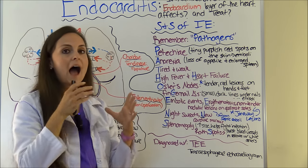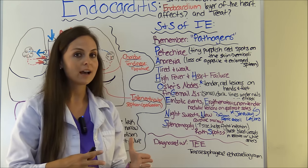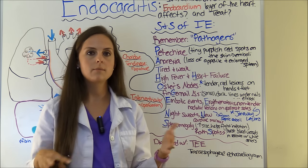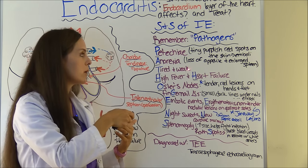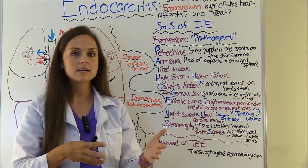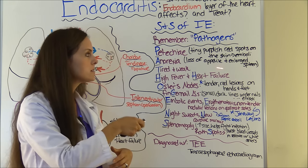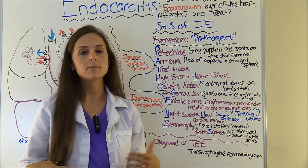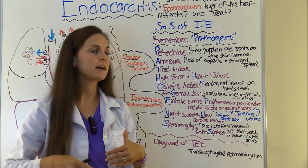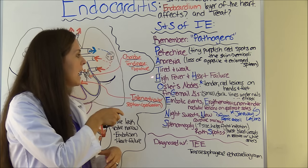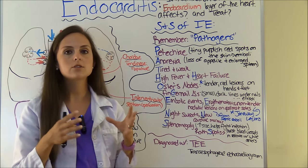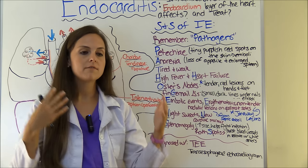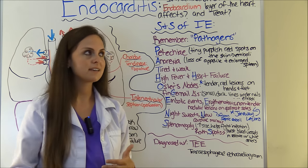P is for petechiae — tiny purplish-red spots on the skin from emboli breaking off. A is for anorexia — the patient doesn't feel good and has a loss of appetite, also because the spleen enlarges (splenomegaly) and pushes on the stomach. T is for tired and weak. H is for high fever — patients will have very high fevers, which is often what brings them in for help.